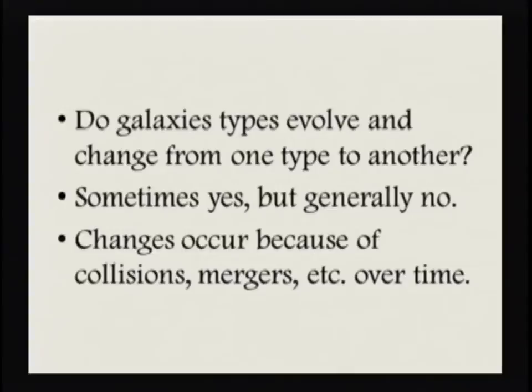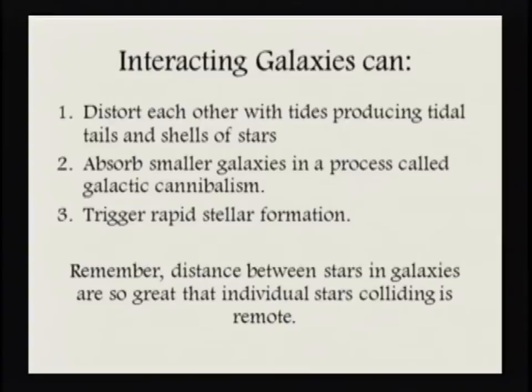Sometimes yes, but generally no. It's not really the way things work. We certainly have seen what happens when galaxies do collide, and from that we know they are changing. Are they merging from one type into another — elliptical to spiral or spiral to elliptical? No. Yes sometimes, but generally no, unless something happens. Because of these collisions, one galaxy rams into the other, or they're moving in the same direction and finally merge. That occurs over time given how big these galaxies are and what the distances between individual stars within them are. When galaxies interact, they can distort each other with tides, producing tidal tails and shells of stars.